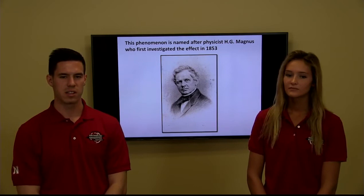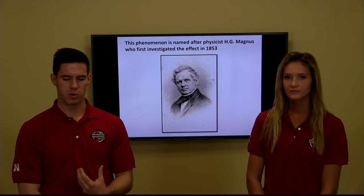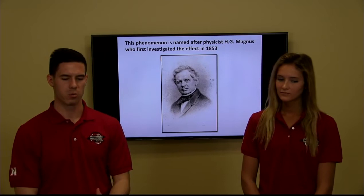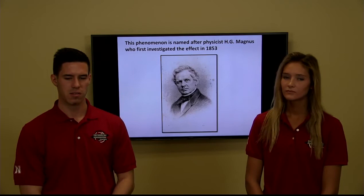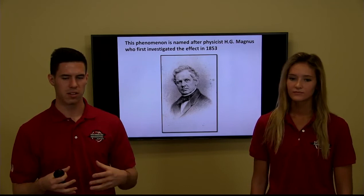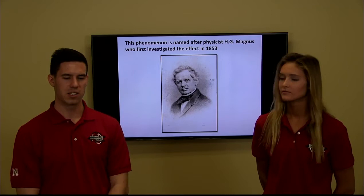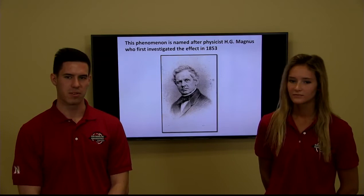The Magnus effect was first experimented with, discovered, and named after a German physicist and chemist named Heinrich Gustav Magnus. Magnus was more of an experimental physicist than a theoretical physicist, meaning instead of worrying about equations and formulas he focused on doing physical experiments and making observations. His experiments mostly involved round spherical projectiles and airflow. As a fun fact, the Magnus effect was also initially experimented with by Isaac Newton, but scientists decided he had enough things named after him already.